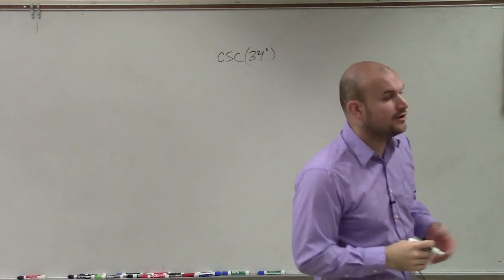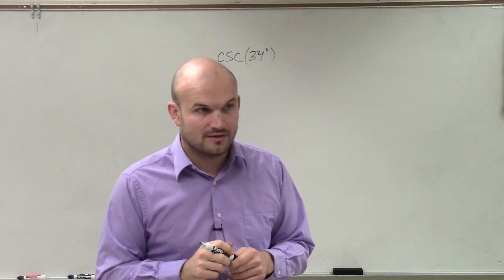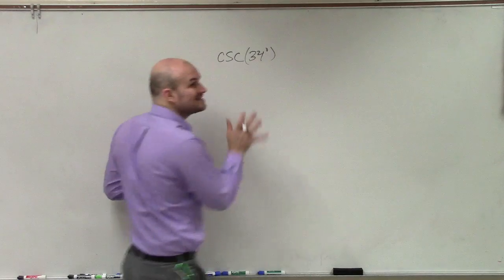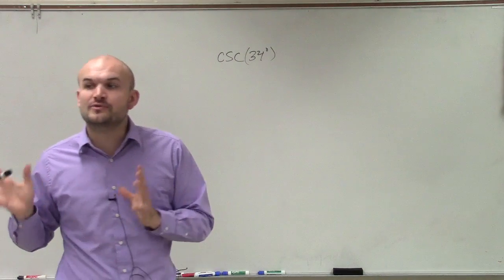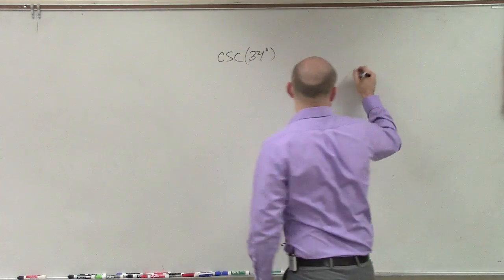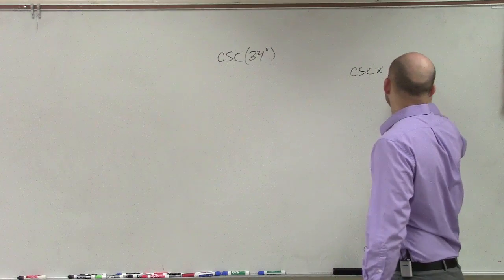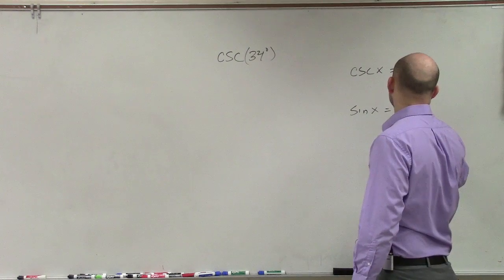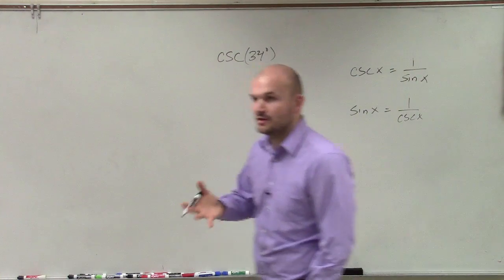So remember, if you're going to evaluate cosecant of 34 degrees, we do not have a cosecant function on our calculator. However, remembering this, this is the reciprocal of sine, not the inverse. It's the reciprocal. We could say that the cosecant of x is equal to 1 over the sine of x. As in, the sine of x equals 1 over cosecant of x. They are reciprocal functions.